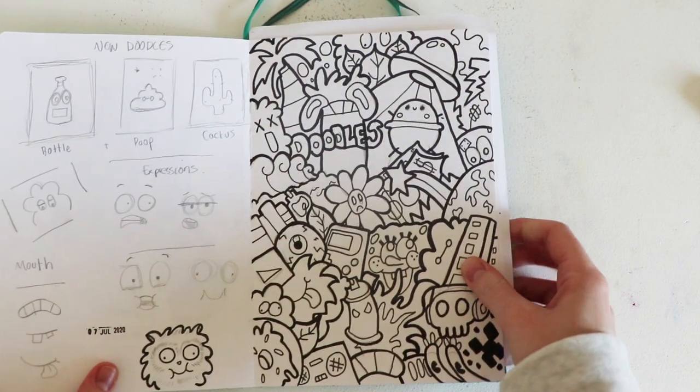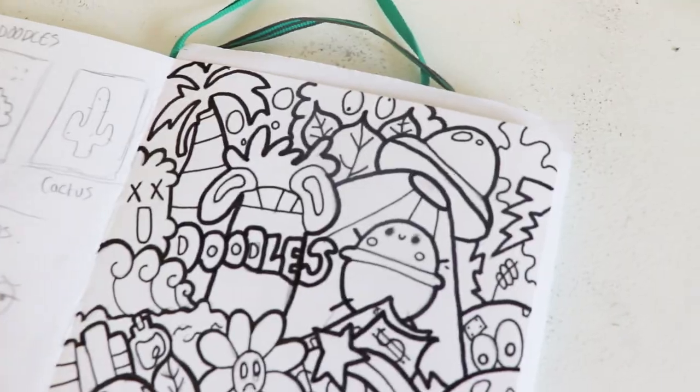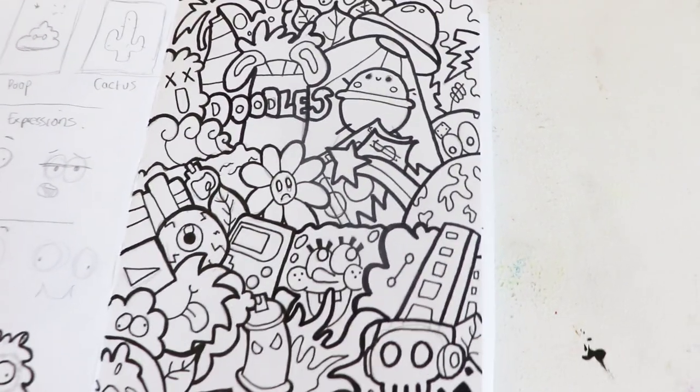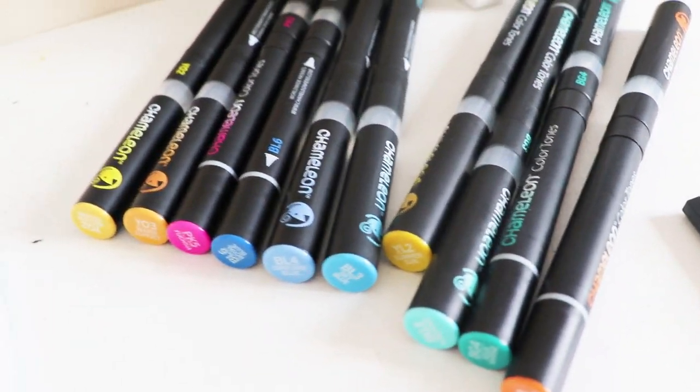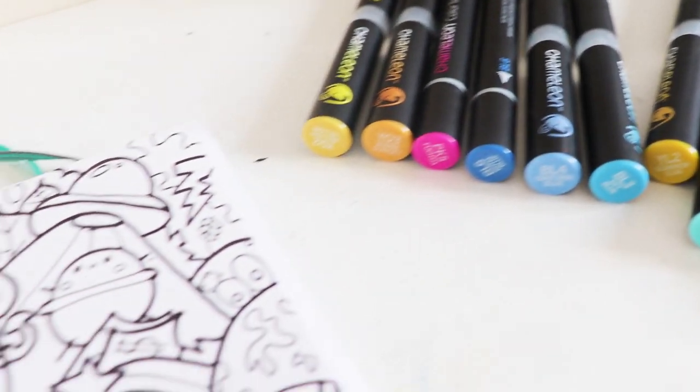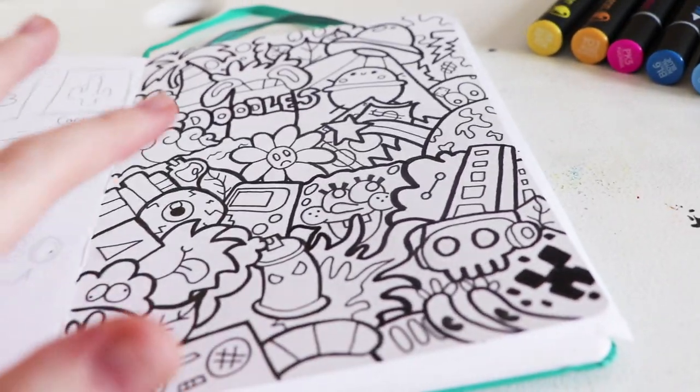Once we've finished the line work, we then move on to the color. I would suggest looking up color combos on the internet and seeing which colors work well together. If you have a good understanding of color theory, you should be alright, but I'm not that great at it, so I always make sure to check.